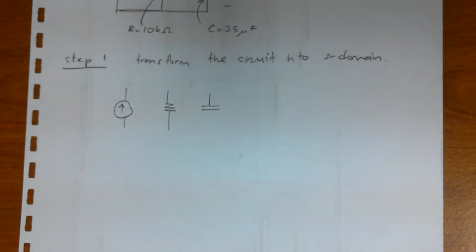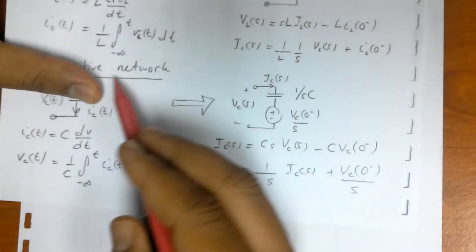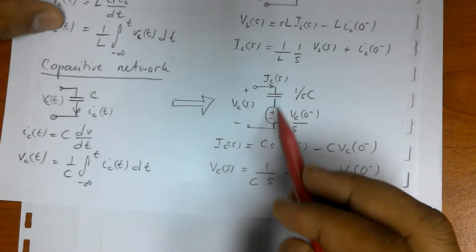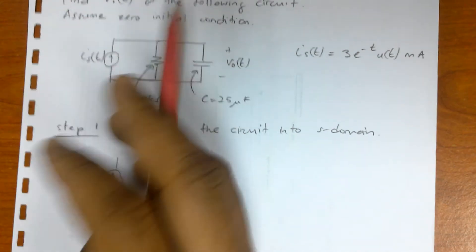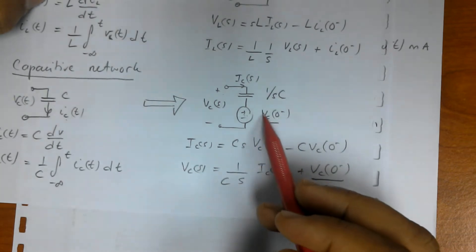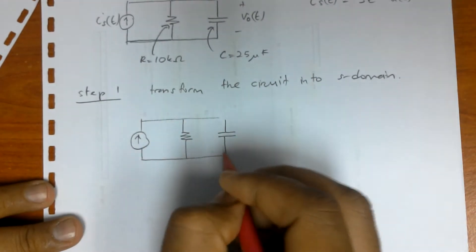For the capacitor, if we transform into S domain, we have two elements: capacitor and voltage source. In this case, since we assume that zero initial condition, the voltage source is not available. So we have only capacitor.